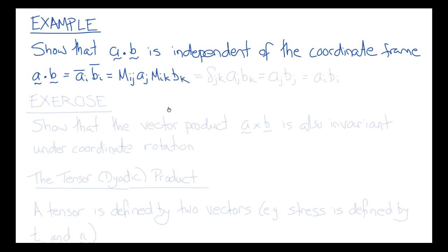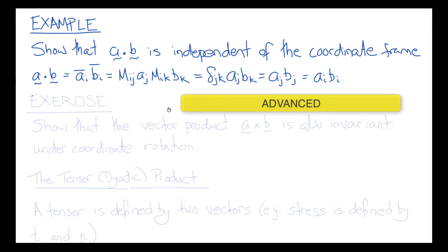Converting to the original frame: AI_bar BI_bar equals MIJ AJ times MIK BK. But MIJ times MIK is delta_JK, so that gives us delta_JK AJ BK, which equals AJ BJ, or equivalently AI BI. In other words, AI_bar BI_bar is the same as AI BI — the dot product is the same in both frames.